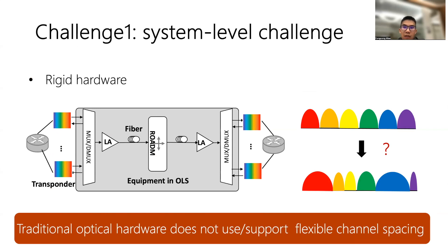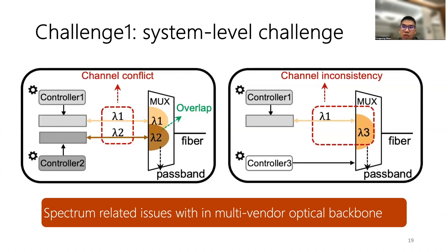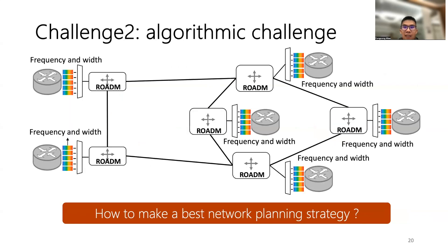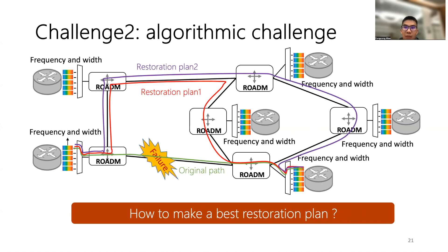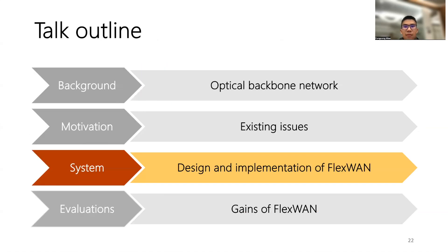The flaws in the fixed optical backbone motivate us to design a novel flexible WAN framework. However, this is not trivial due to both system-level and algorithmic challenges. Existing optical hardware operates on a rigid spectrum grid, making it challenging to support extremely high data rates at large spectrum widths. The flexible hardware introduces new practical problems in a multi-vendor optical backbone, such as channel conflicts and channel inconsistency, which can lead to capacity loss. It is also challenging for cloud providers to choose optimal transponder configurations at the planning stage, and to provide an optimal restoration plan during optical failures.